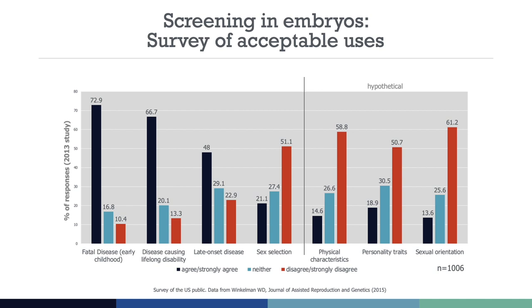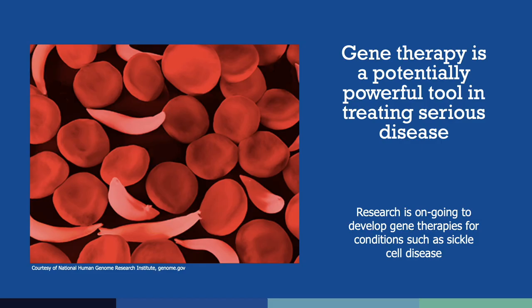People have a range of opinions about the uses and limits of embryo screening, including the use of donor matching as the Nash family did. In a 2015 study, a majority of Americans surveyed thought it was acceptable to use PGD to select embryos in order to avoid serious illness or disability, or to identify a match for stem cell donation. Note that close to 20% of people stated it would be acceptable to screen for personality traits and other complex characteristics, even though those options are purely hypothetical. The genetic contributions to complex traits such as personality, intelligence, sexual orientation, and strength are poorly understood, making these characteristics unsuitable for this sort of technology.